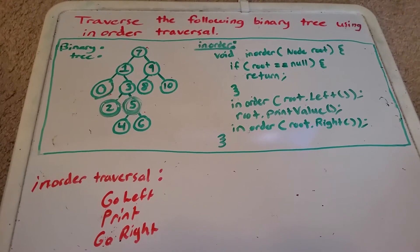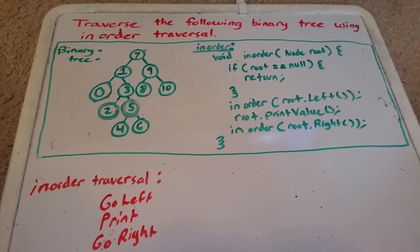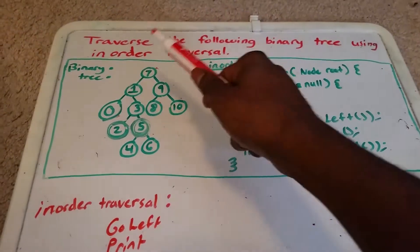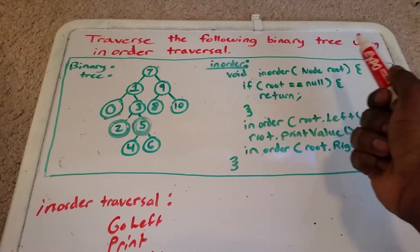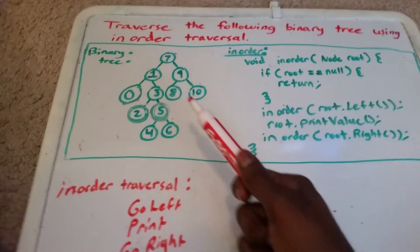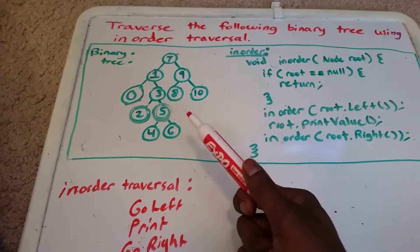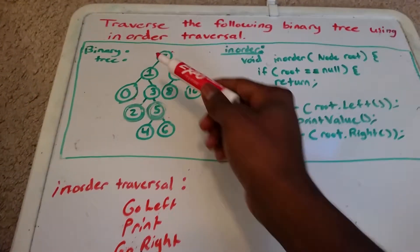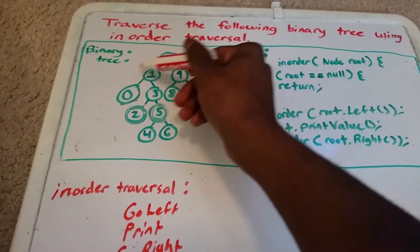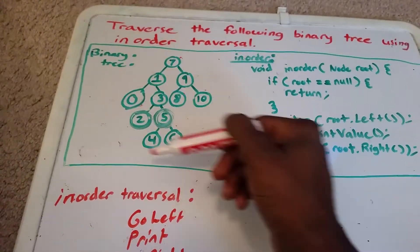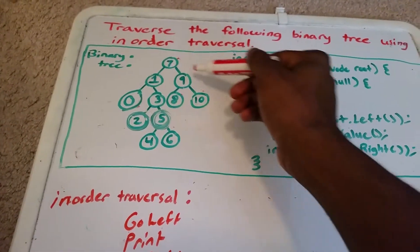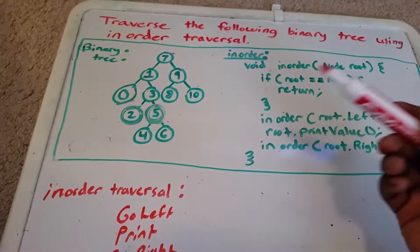Hey YouTube, this is a video on tree traversal. Here we want to traverse the following binary tree using the inorder traversal. To the left is our binary tree — it's actually a binary search tree, because everything to the left of 7 is less than 7, and everything to the right of 7 is greater than 7.